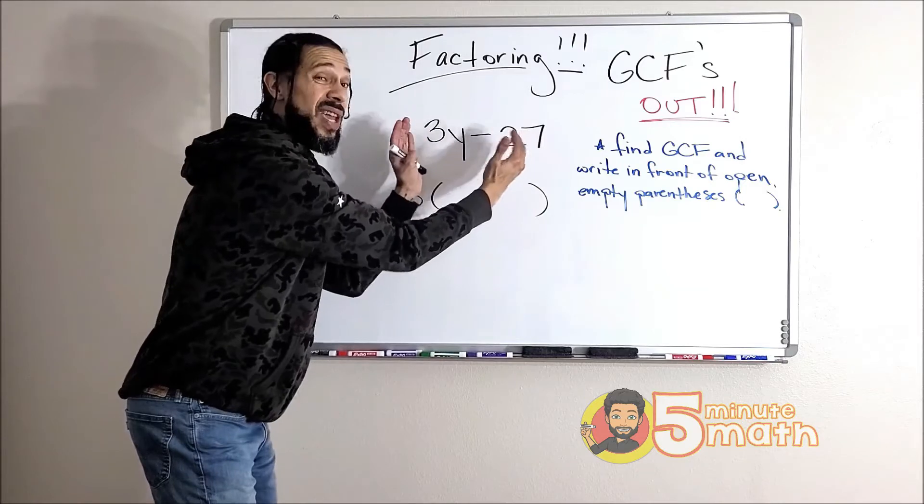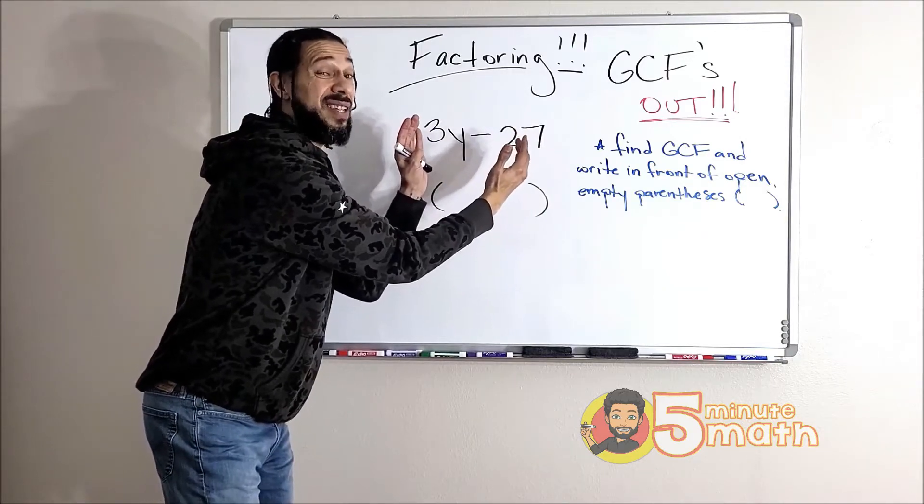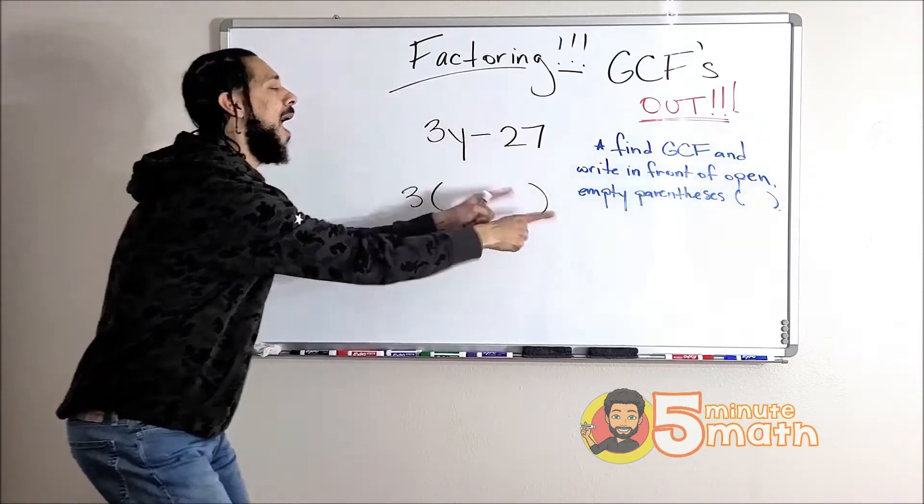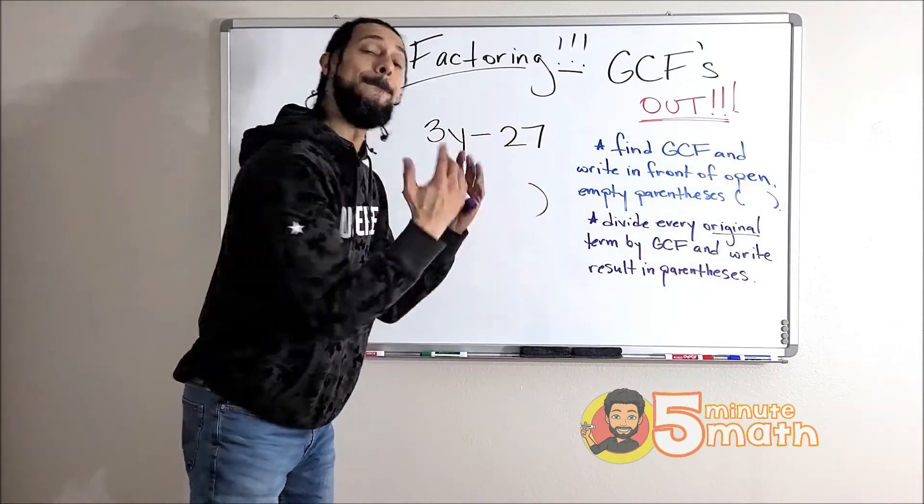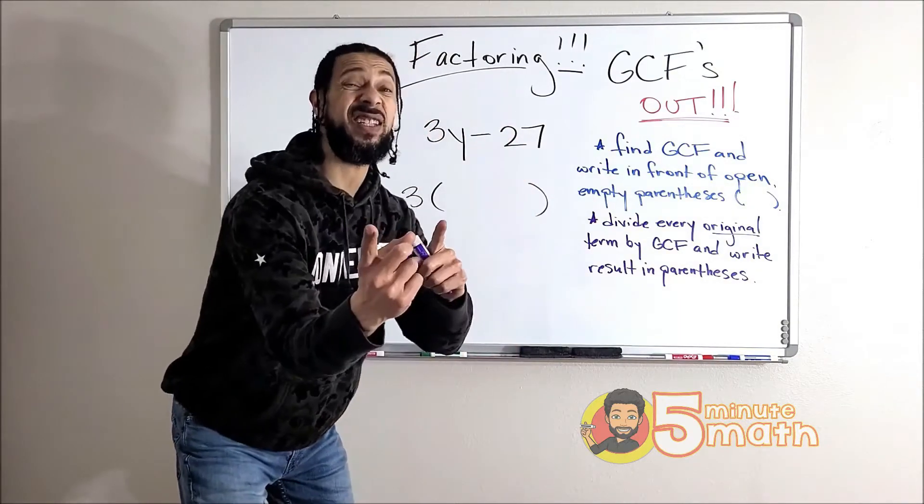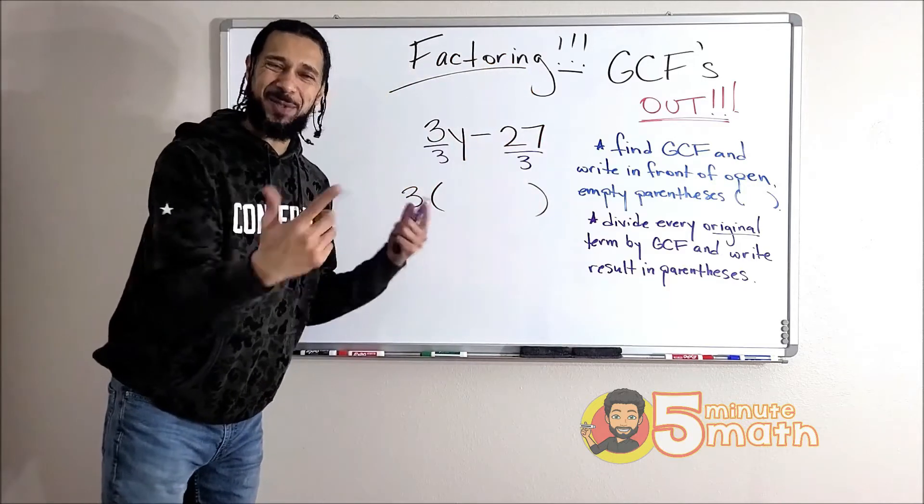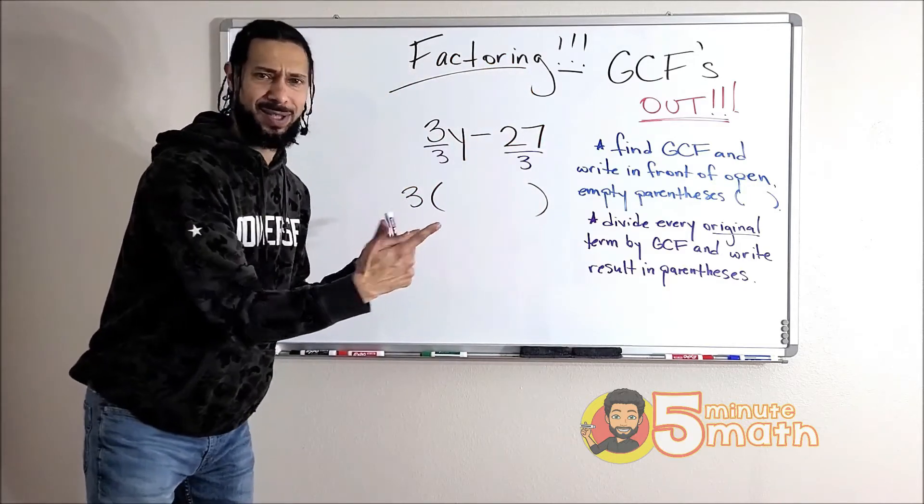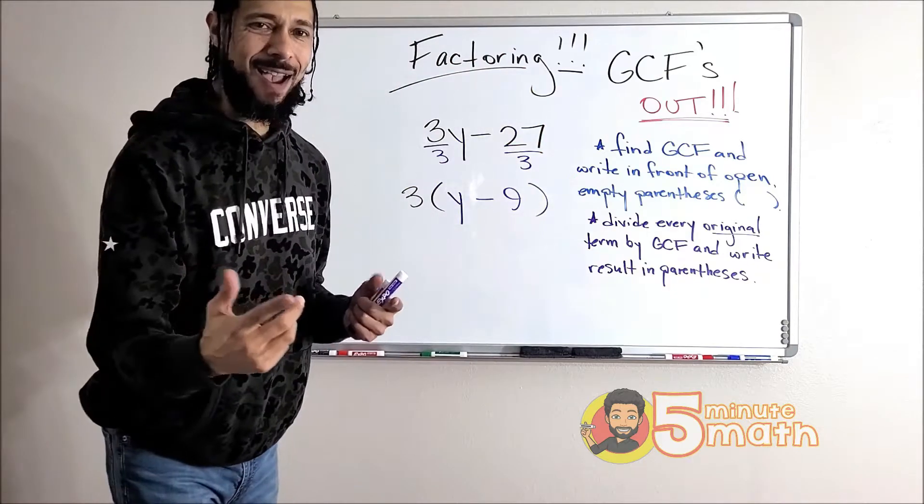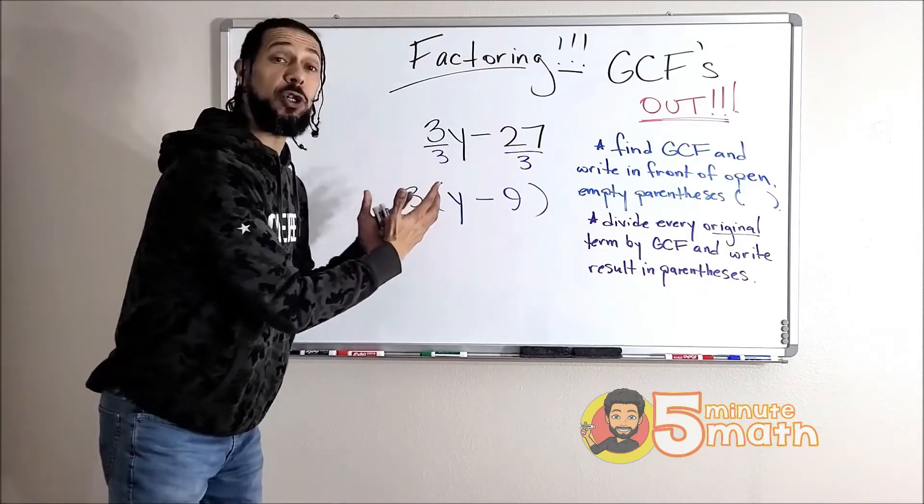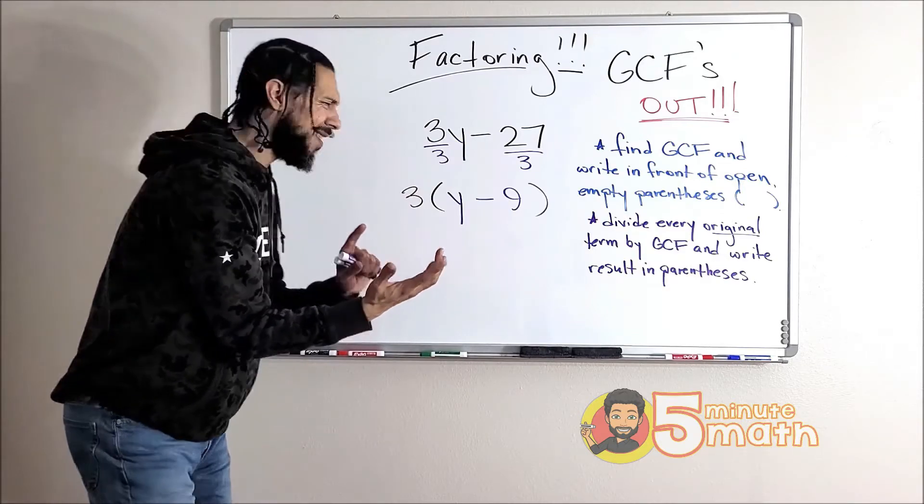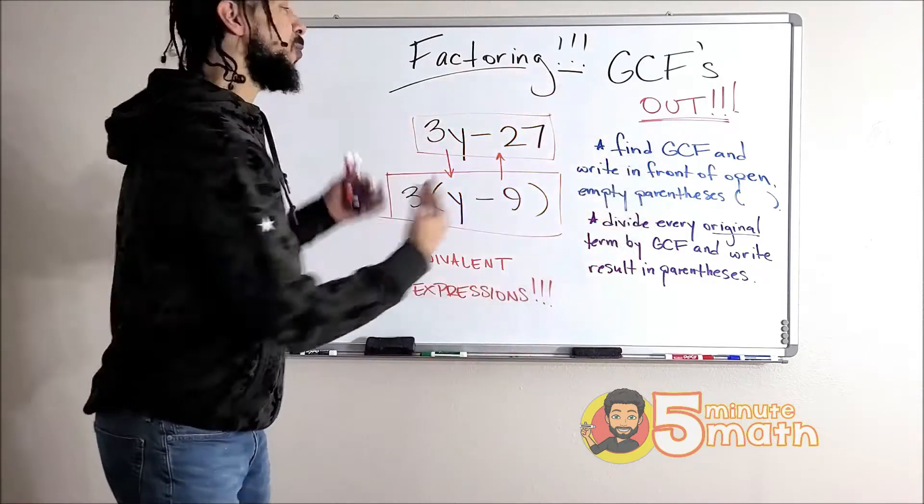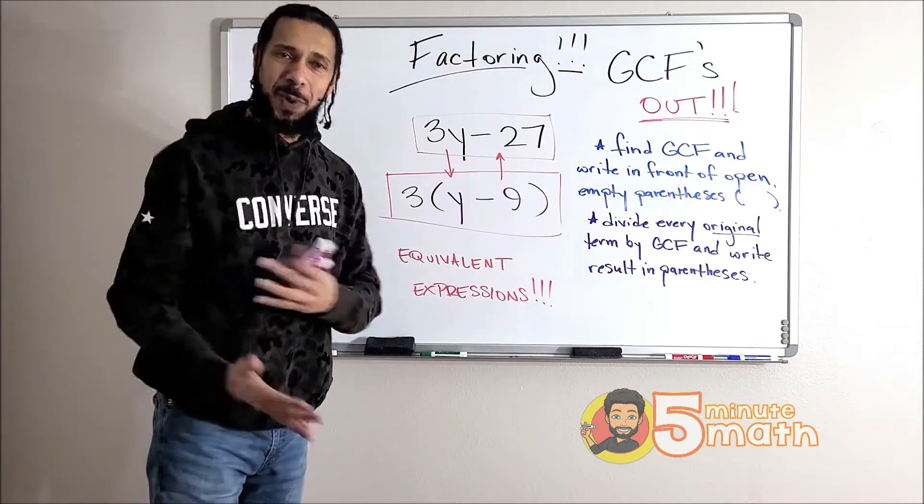The next step goes like this: divide every term in my original expression by that GCF just like this. Then I'm going to write my result right here in parentheses. Now if we take a closer look at what we started with and what we ended with, doesn't this look familiar? Yes, those are those equivalent expressions we were talking about before.